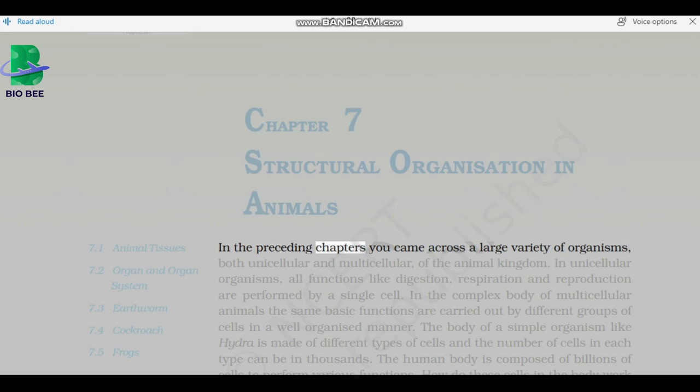In preceding chapters you came across a large variety of organisms, both unicellular and multicellular, of the animal kingdom. In unicellular organisms, all functions like digestion, respiration, and reproduction are performed by a single cell.